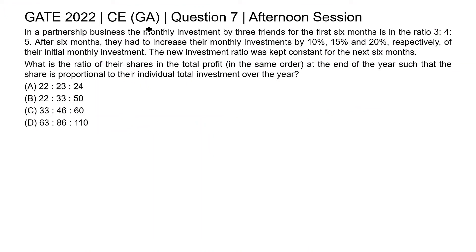This is question 7 of the civil engineering general aptitude section of GATE 2022 afternoon session. In a partnership business, the monthly investment by three friends for the first six months is in the ratio 3:4:5. After six months, they increased their monthly investment by 10%, 15%, and 20% respectively. The new investment ratio was kept constant for the next six months. We need to find the ratio of their shares in total profit at the end of the year, where the share is proportional to their individual total investment. Suppose three friends are A, B, and C.